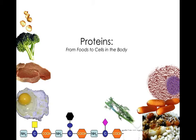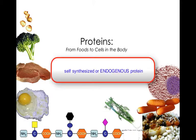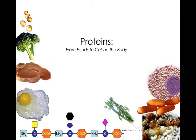In Module 3.2, we're going to look at proteins. Dietary protein has lots of functions in our body, and I want you to understand how our bodies use these amino acid building blocks that we get from the protein we eat to make our own proteins inside our bodies — what your book refers to as self-synthesized or endogenous protein synthesis. And this is what our body does to make proteins.